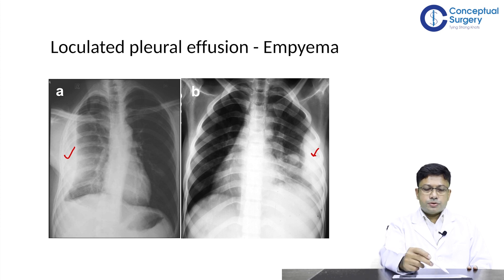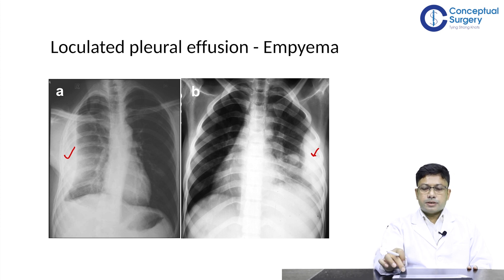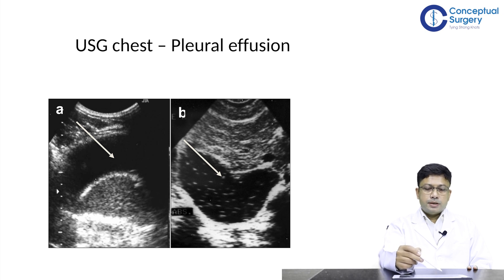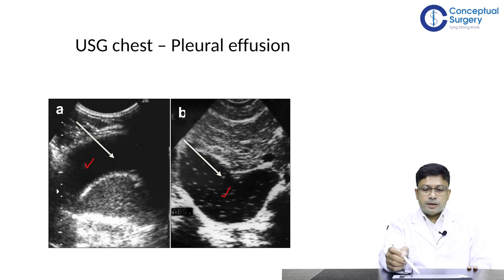For loculated pleural effusions, an ultrasound evaluation for proper site marking before inserting a chest tube is essential. Ultrasound of the chest in pleural effusion cases reveals a dark anechoic area representing free pleural fluid in the pleural cavity, with the diaphragm and moving lung also visible.